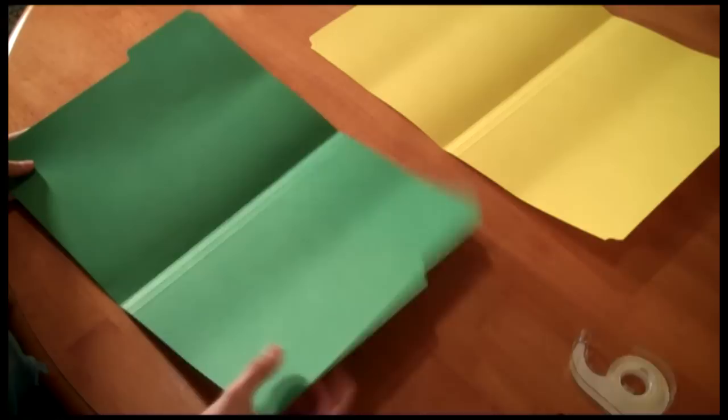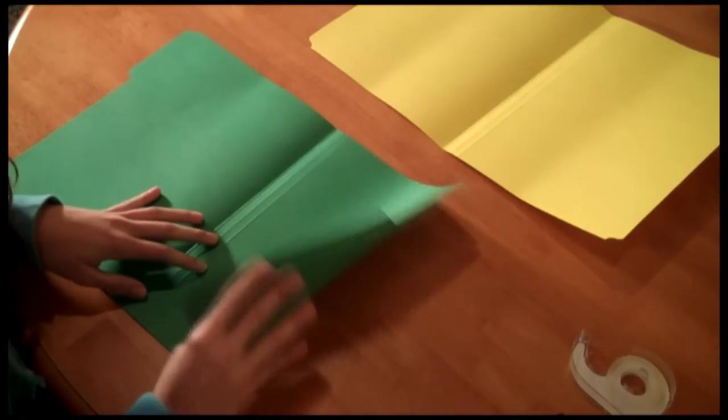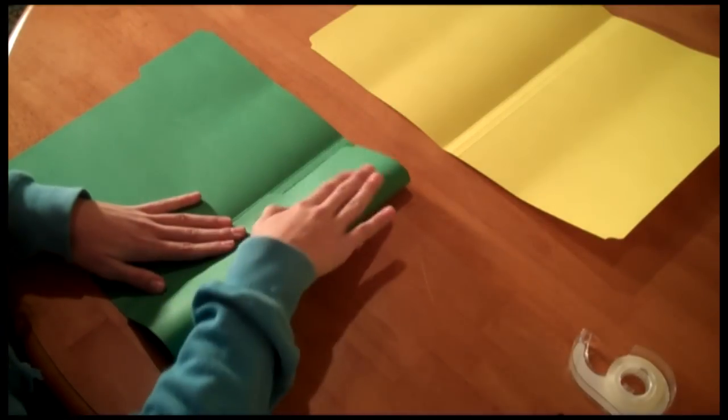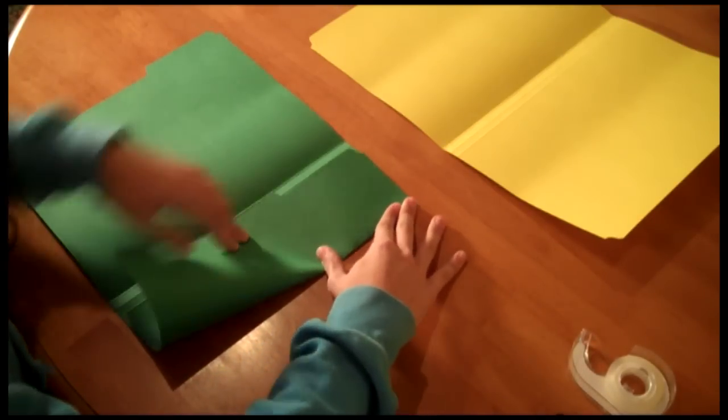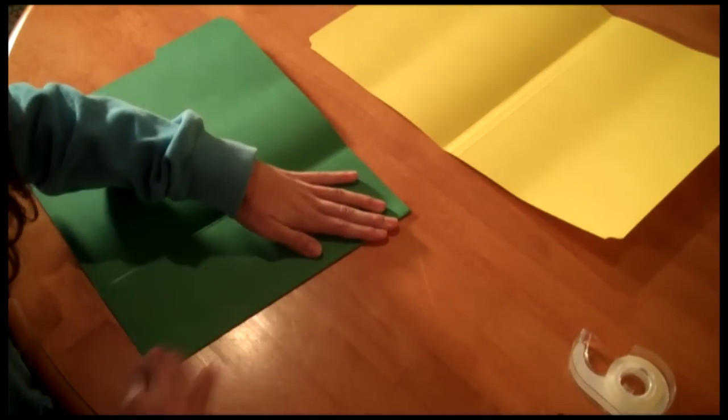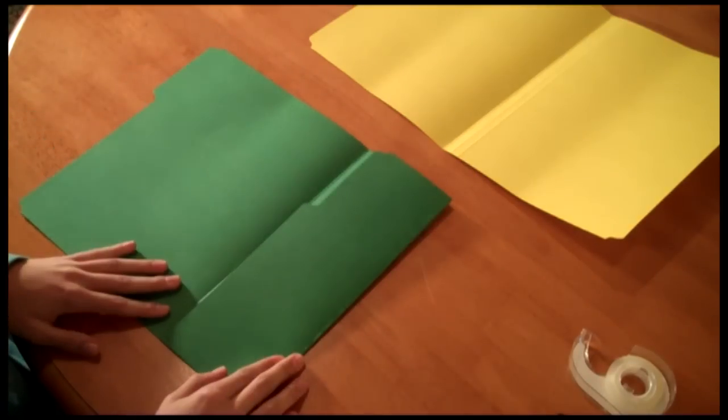If you take the right side and fold it over so that the edge meets the center fold, press down. Your folder book will look like this.